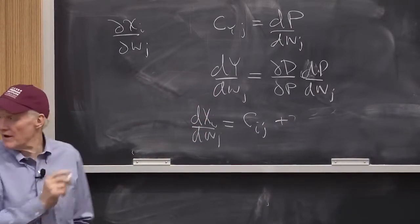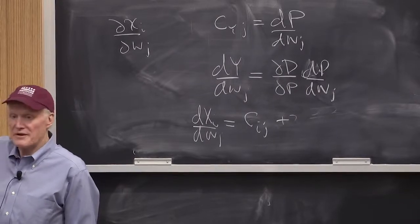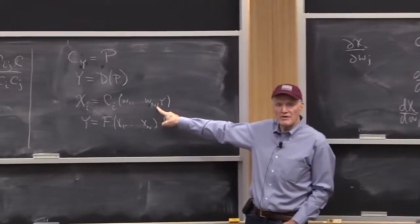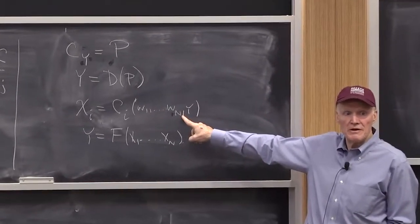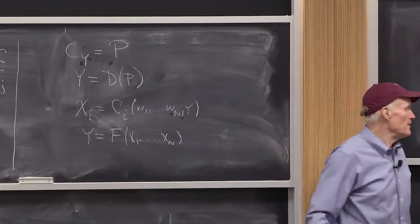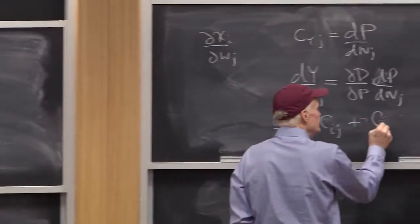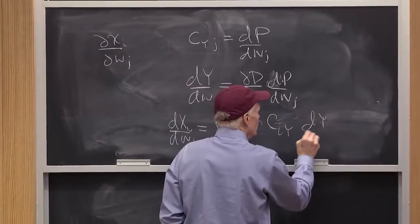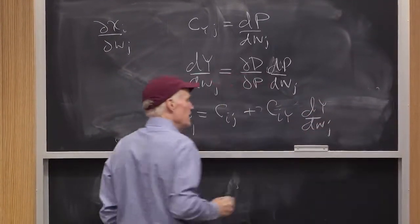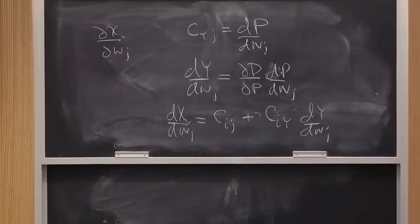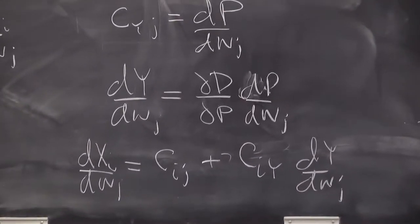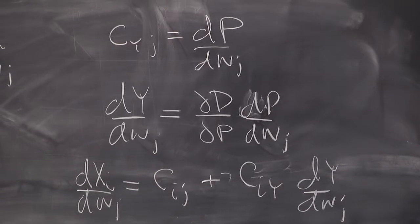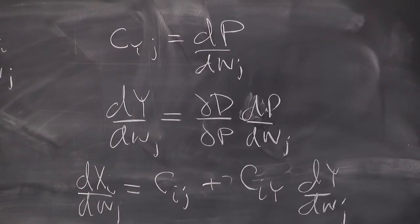Plus, what else? What else do I have to differentiate with respect to in this equation? What else is endogenous? Yeah, y is endogenous. It's got to be like the y derivative. cij, dy, dwj. Then let's go through, what do we know?